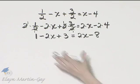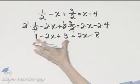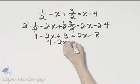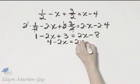Notice I have no parentheses. I do have a couple of like terms. 1 plus 3 is 4, so I'll go ahead and write that as 4 minus 2x is equal to 2x minus 8.